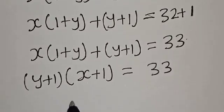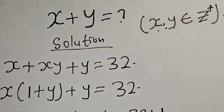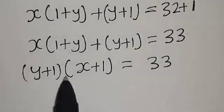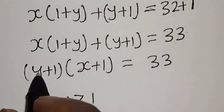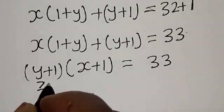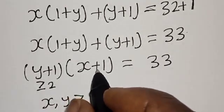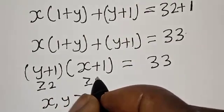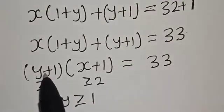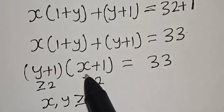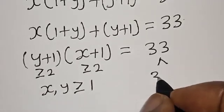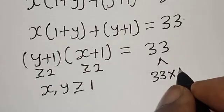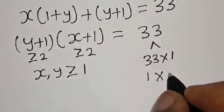Now remember that x and y are positive integers, so x and y are greater than or equal to 1. That means y plus one is greater than or equal to 2, since 1 plus 1 equals 2. Also x plus one is greater than or equal to 2. Therefore (y plus one) times (x plus one) equals 33.